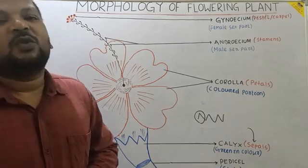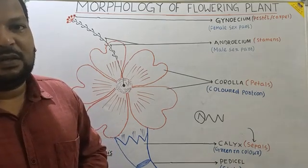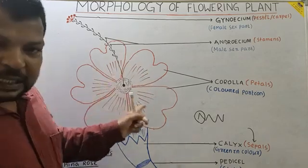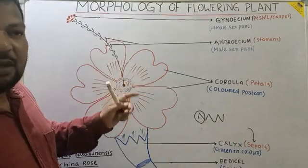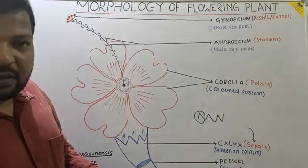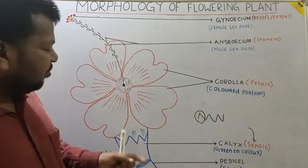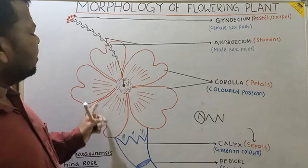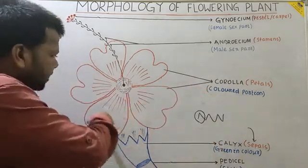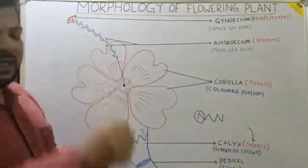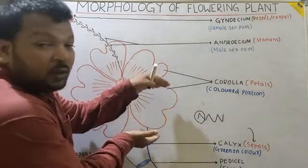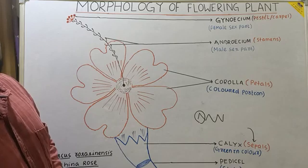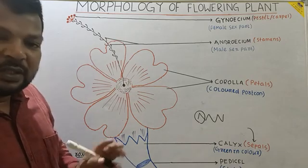Calyx provides protection to the flower during bud condition. Next, the coloring portion of the flower is called Corolla. The individual part of Corolla is called Petal.